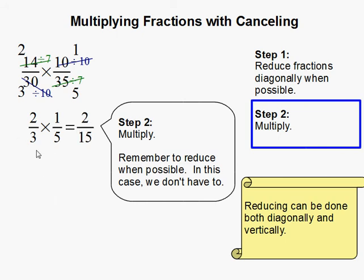2 times 1 is 2. 3 times 5 is 15. And remember to reduce when possible.